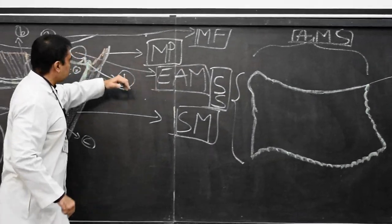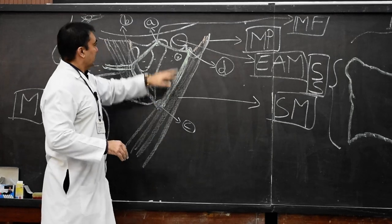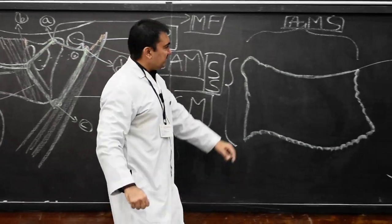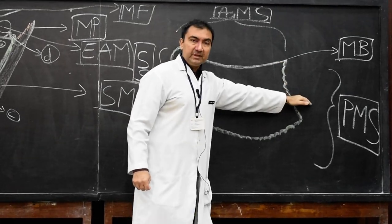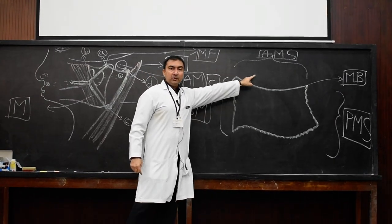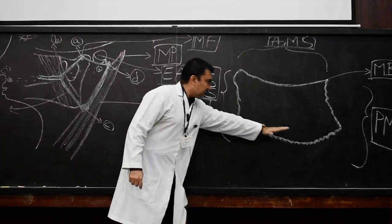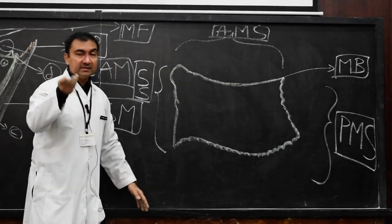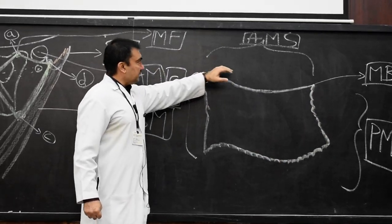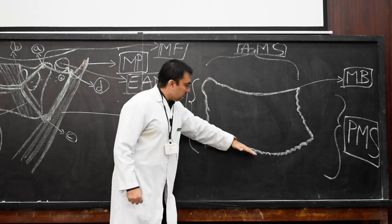The fourth surface not visible in this cross-section is the superior surface, which is concave and always lies below the head of the mandible and the external acoustic meatus. To summarize: the medial border separates the anteromedial surface from the posteromedial surface. The anterior border separates the anteromedial surface from the superficial surface. The posterior border separates the superficial surface from the posteromedial surface.